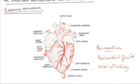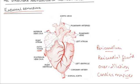The heart is made up of a special type of muscles known as cardiac muscles. These muscles are specialized — they contain interconnected fibers and can contract and relax continuously without getting fatigued.